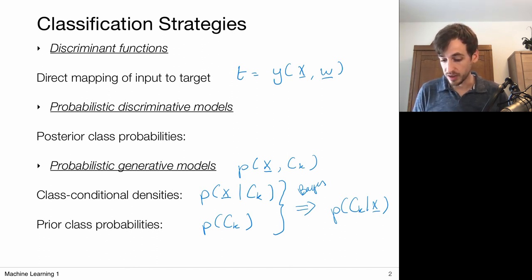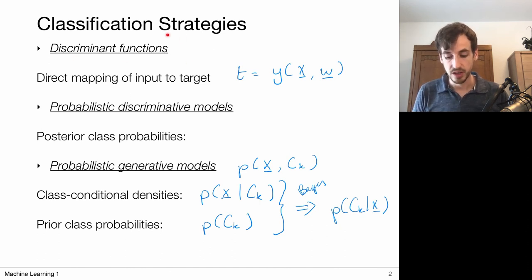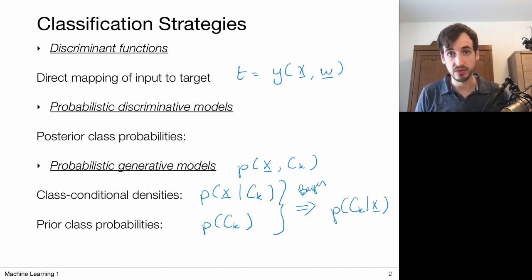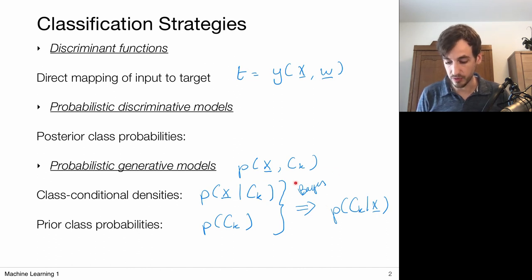In the setting of discriminant functions, we covered two methods: linear classification models obtained via least squares regression, although these had issues related to outliers, and the perceptron which also led to direct modeling of decisions via discriminant functions. Now, the third class of classification strategies we haven't covered yet are probabilistic discriminative models. This falls somewhere in between direct modeling of discriminant functions — where we do not rely on any probability theory at all — and the probabilistic generative methods where we adopt a full parametric probabilistic viewpoint.